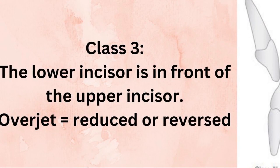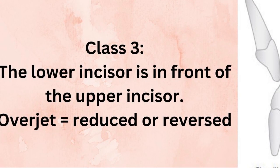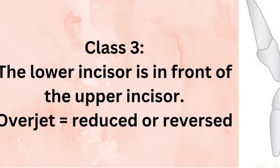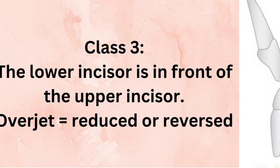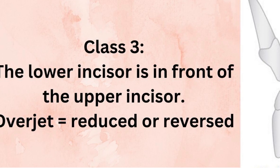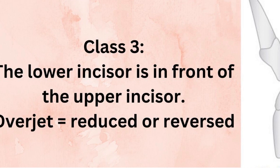Whereas in class 3 incisor relation, the lower incisor is in front of the upper incisor. Or, in other words, the upper incisor occludes on the cingulum of the lower incisor. So it's opposite to class 1. Here, the overjet is reduced or reversed.